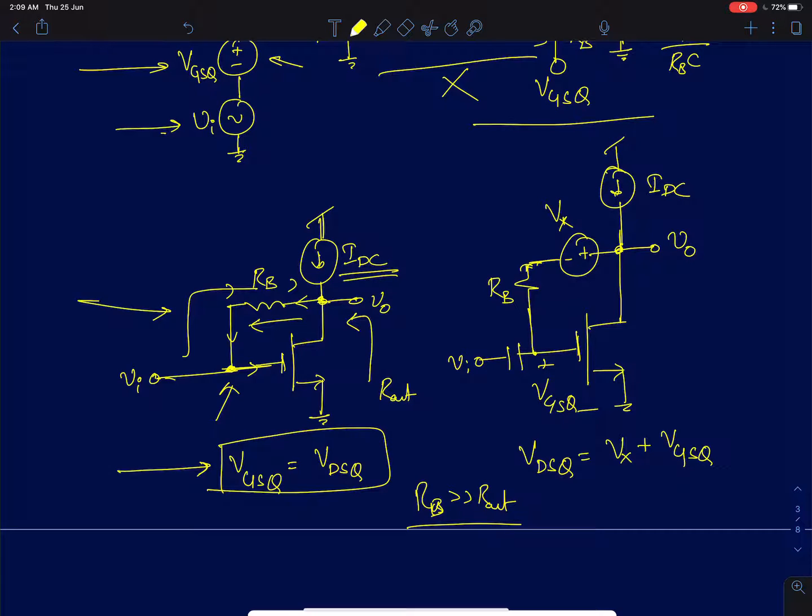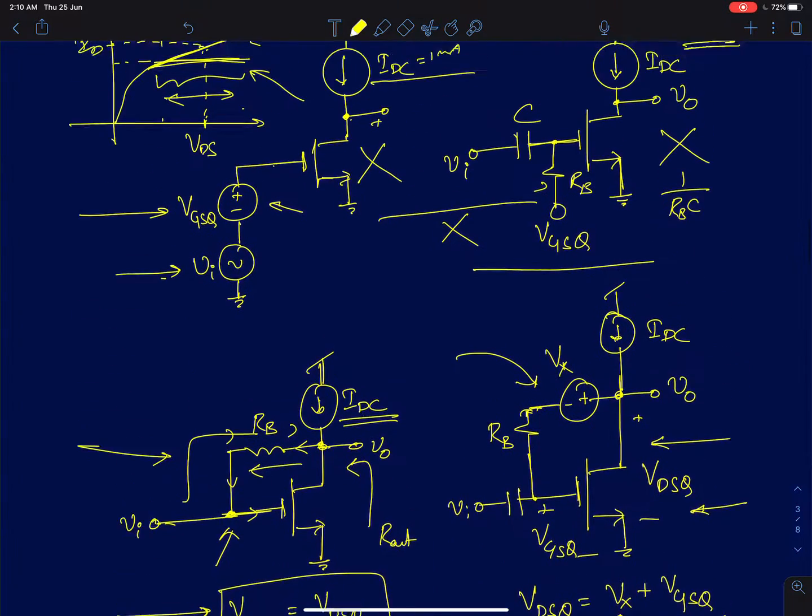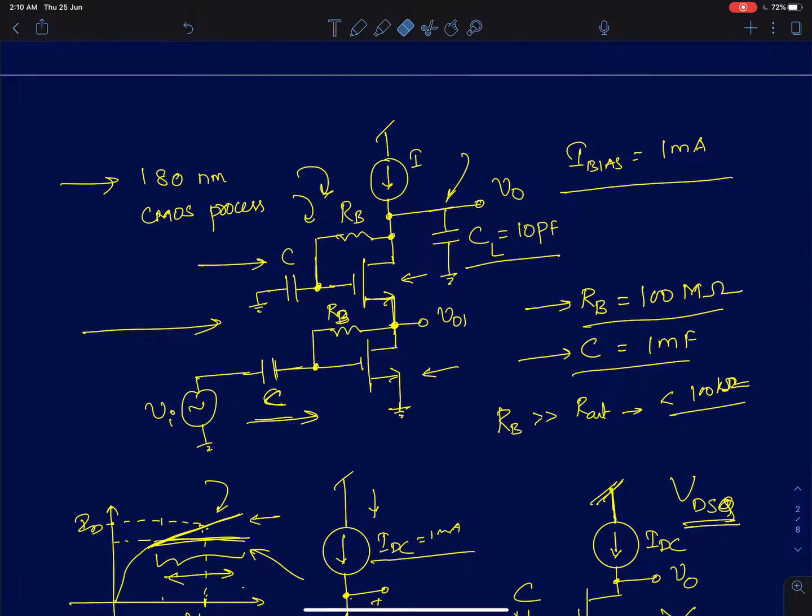The problem with this test bench is that VGSQ is forced to be equal to VDSQ. That can be resolved by just adding a voltage VX in series with RB as shown in this circuit. At DC the VDSQ will simply be equal to VX plus VGSQ. So now we can independently tweak VDS by varying VX. So here in this setup we can actually have different VGS and VDS. But for this simulation I have not used a VX. I have just used this resistor RB here and I have chosen RB as 100 mega ohms in this simulation.